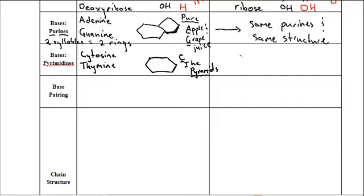And in RNA, thymine is replaced by uracil.